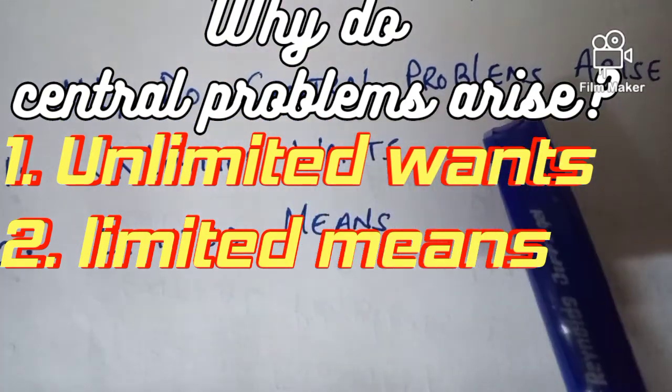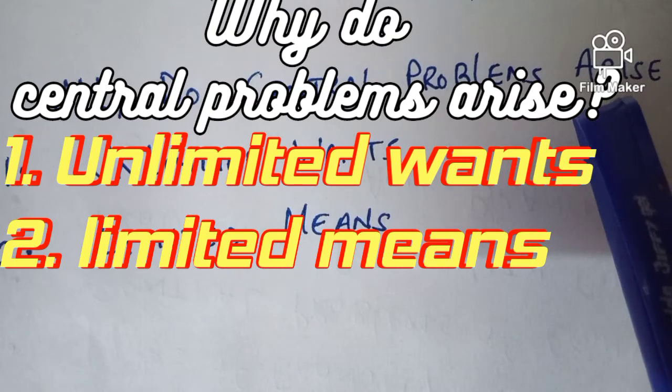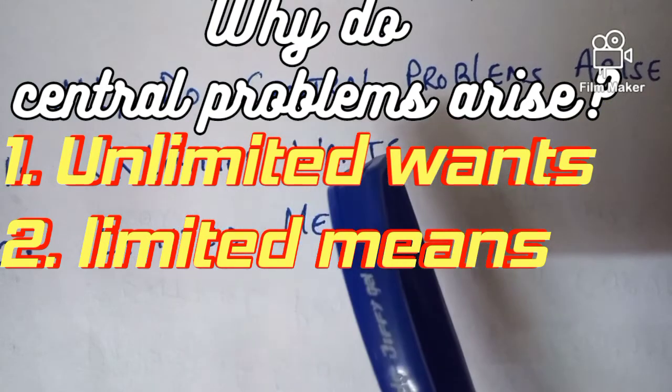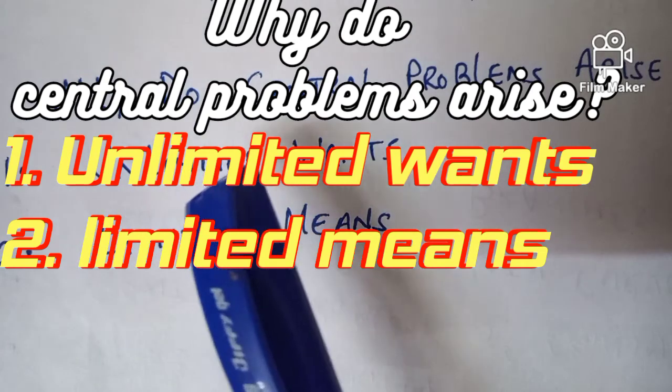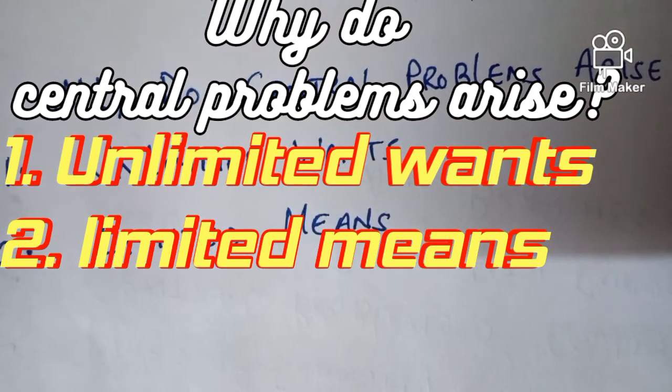Central problems arise because there are unlimited wants and limited means. What is the meaning of unlimited wants? Unlimited wants means that people's desires never get fulfilled. They will never get enough because they always want more and would like to have which they couldn't.